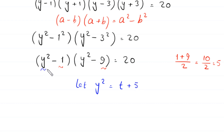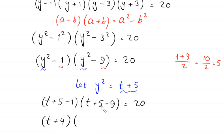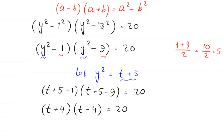We replace y squared with t plus 5, giving us (t plus 5 minus 1) times (t plus 5 minus 9) equals 20, which simplifies to (t plus 4) times (t minus 4) equals 20. Applying the difference of squares identity, this becomes t squared minus 16 equals 20.